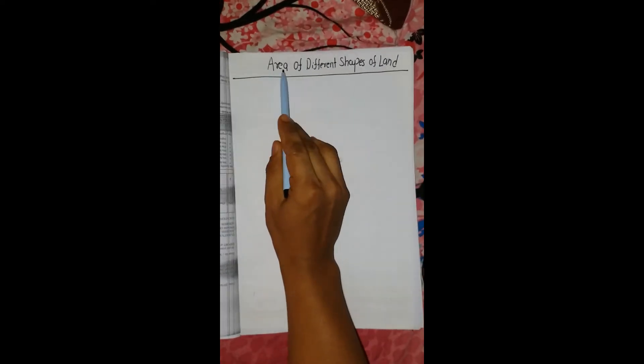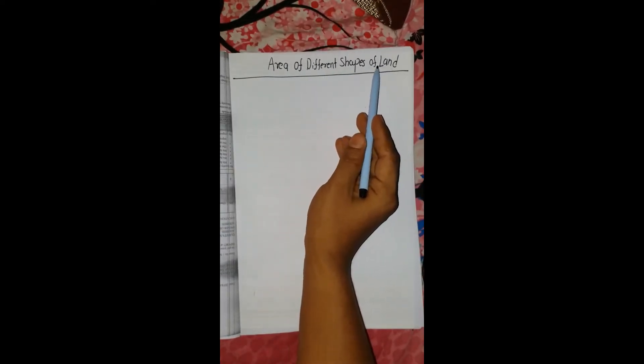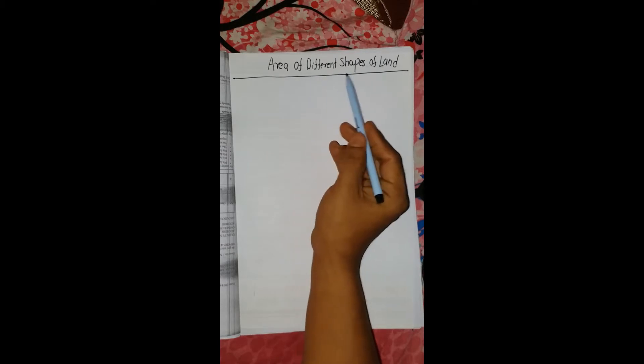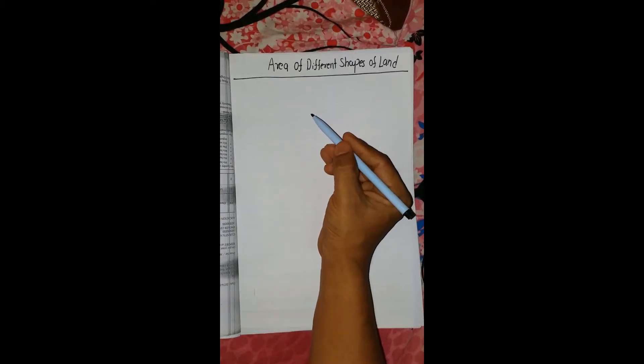Namaskar. So this is a video from SPI Engineering YouTube channel. Today we are going to learn how to calculate the area of different shapes of land. For different sets of land, as a sample example, let's start with a square.